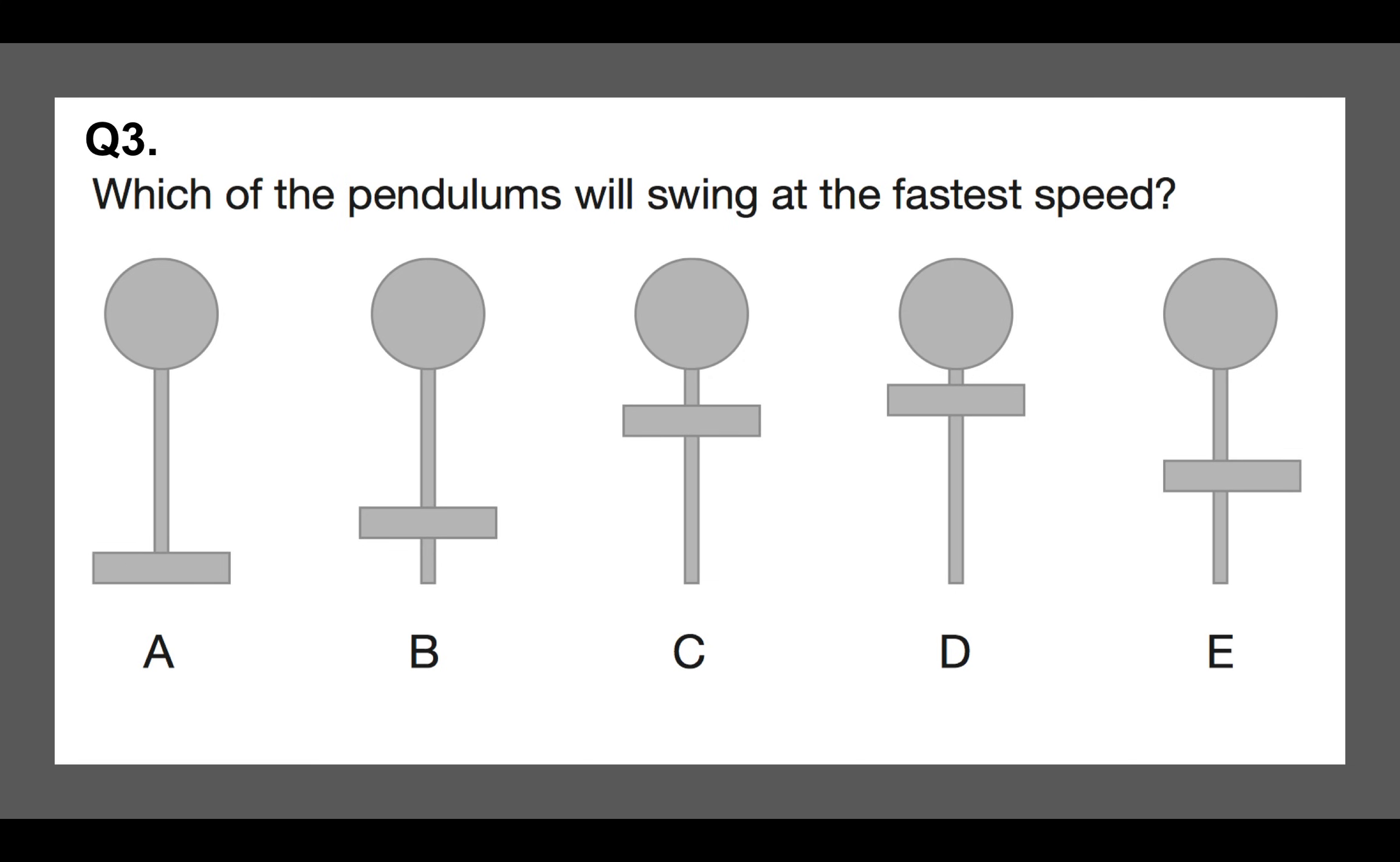So if some of you are thinking, what am I talking about with regards to bar? These are all the bars. And the one at the highest next to the actual pendulum and the round circle part will be the one that goes faster. So the answer is, of course, D. So that's the one that will swing at the fastest speed.